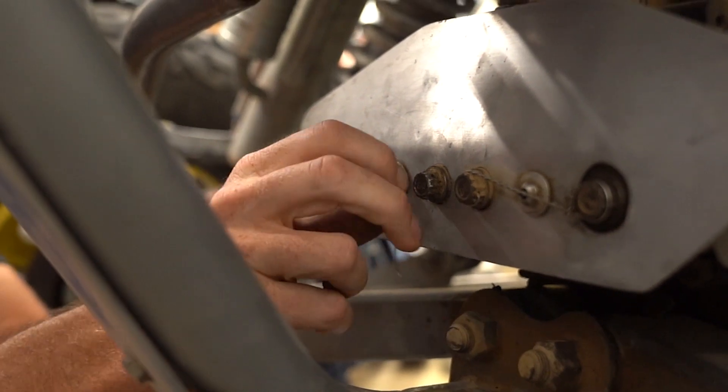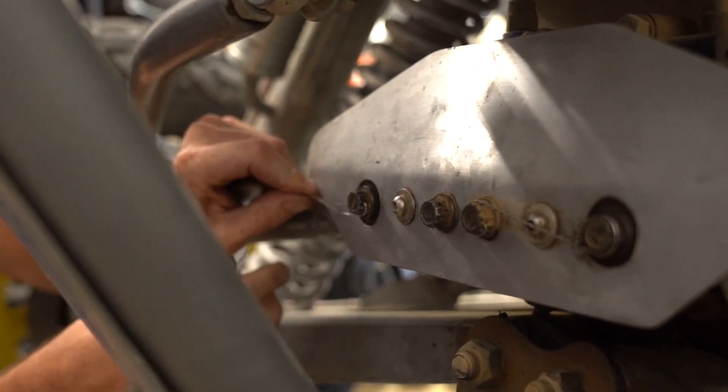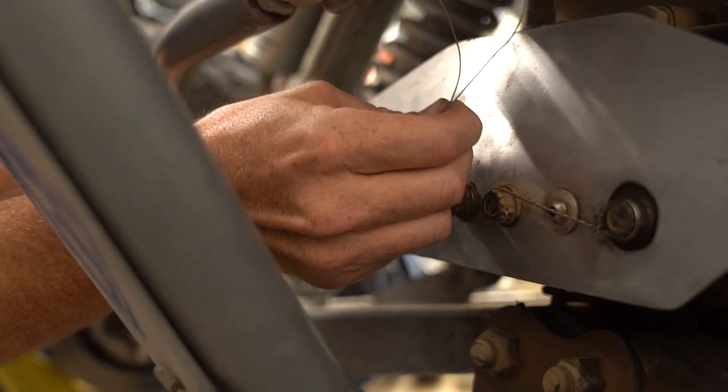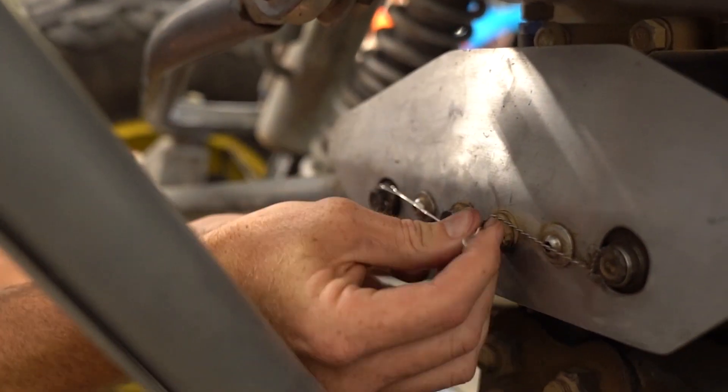So you want to take this leading edge here, wrap it around the bolt in the direction of tightening. And you want to make sure there's always at least 90 degrees of wrap there before you head to the next bolt. Now with that done...